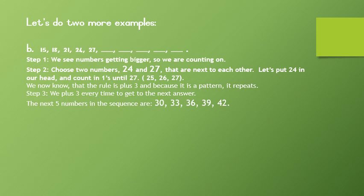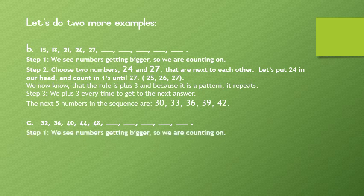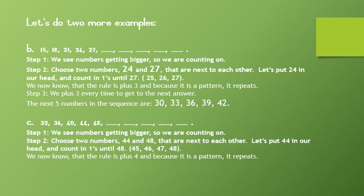Let's try the last example together. We have 32, 36, 40, 44, and 48. Step 1: We see numbers getting bigger so we are counting on. Step 2: Choose two numbers — 44 and 48 — that are next to each other. Let's put 44 in our head and count in ones until 48. We have 45, 46, 47, and lastly 48. We now know that the rule is plus 4, and because it is a pattern it repeats.